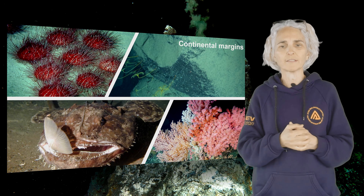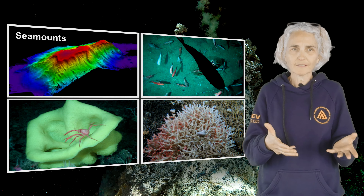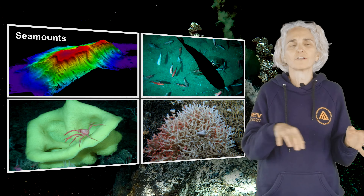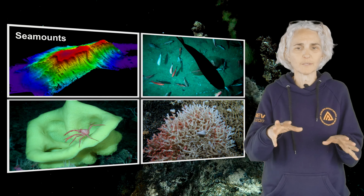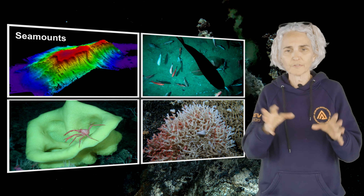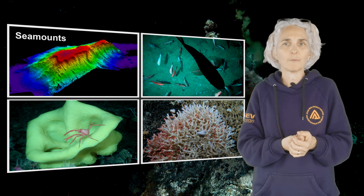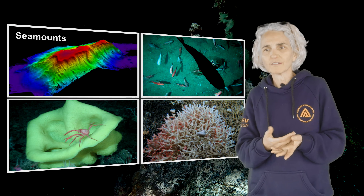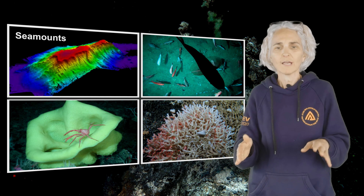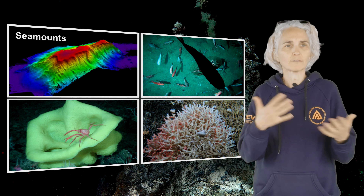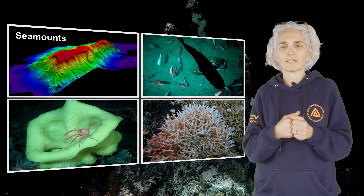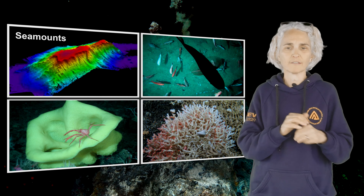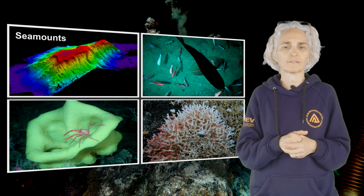Seamounts are another type of heterotrophic ecosystem — underwater mountains that rise a thousand meters or more from the seafloor. The topography changes the hydrography and currents around the seamount, which accumulates particles on top, providing an enhanced amount of organic matter and food for the fauna. Seamounts have rocky outcrops and walls as well as sedimented areas, supporting filter feeders on rocky outcrops, deposit feeders in sediment, and predators feeding on these communities.